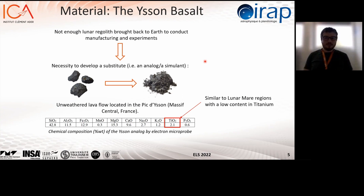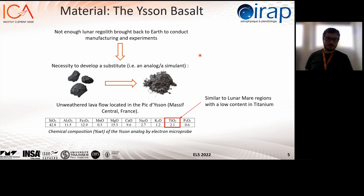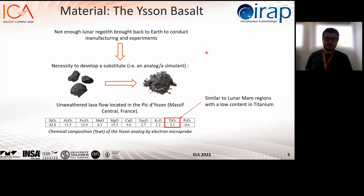Before I talk about the physical characterization, I need to introduce our source material. We do not directly use a real regolith because of its limited quantity on Earth. The IREP teams decided to produce their own replica from a basaltic lava flow in the French mountains, which we call the Ison analog. Its constituents have been determined by microprobe and X-ray diffraction analysis, and it matches overall the mineralogy of a real regolith — with the main constituents being anorthite, diopside, phosphorite, and magnetite — with a quite low content in titanium.